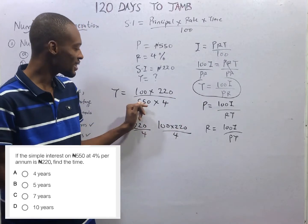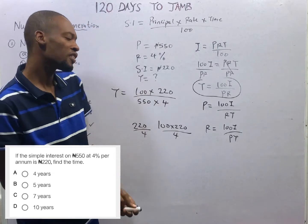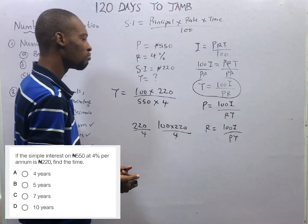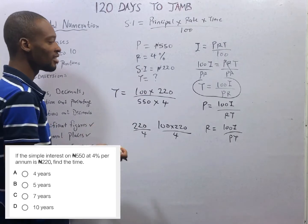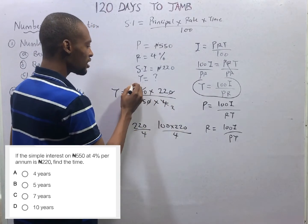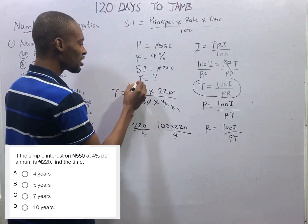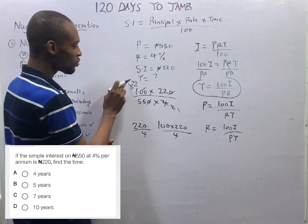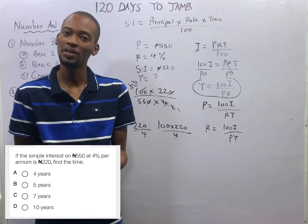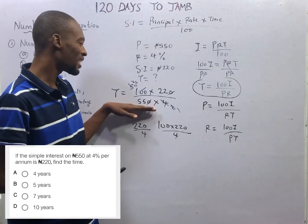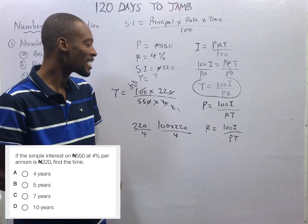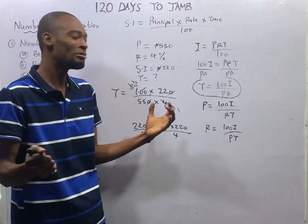Since the numerator has 100 times 220 and the denominator has 550 times 4, both sides are separated by multiplication, so you are free to cancel. One zero cancels one zero; 2 goes into 220 giving 110, and 2 goes into 550 giving 275 — simplifying to 25 times 22 over 55, which gives you 10 years. Solve it whichever way is best for you — the answer is 10 years.